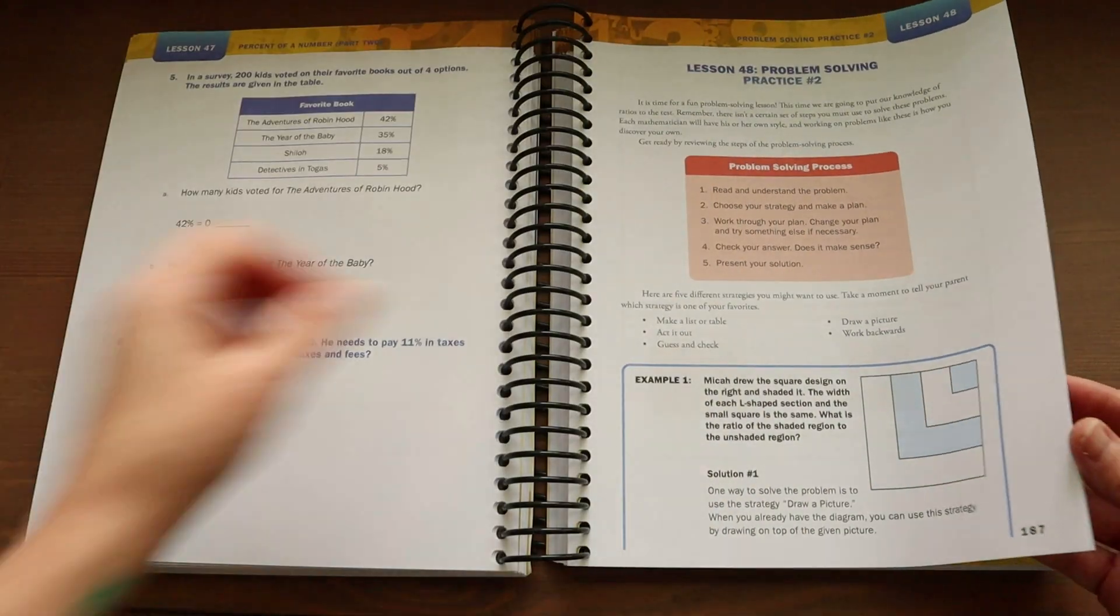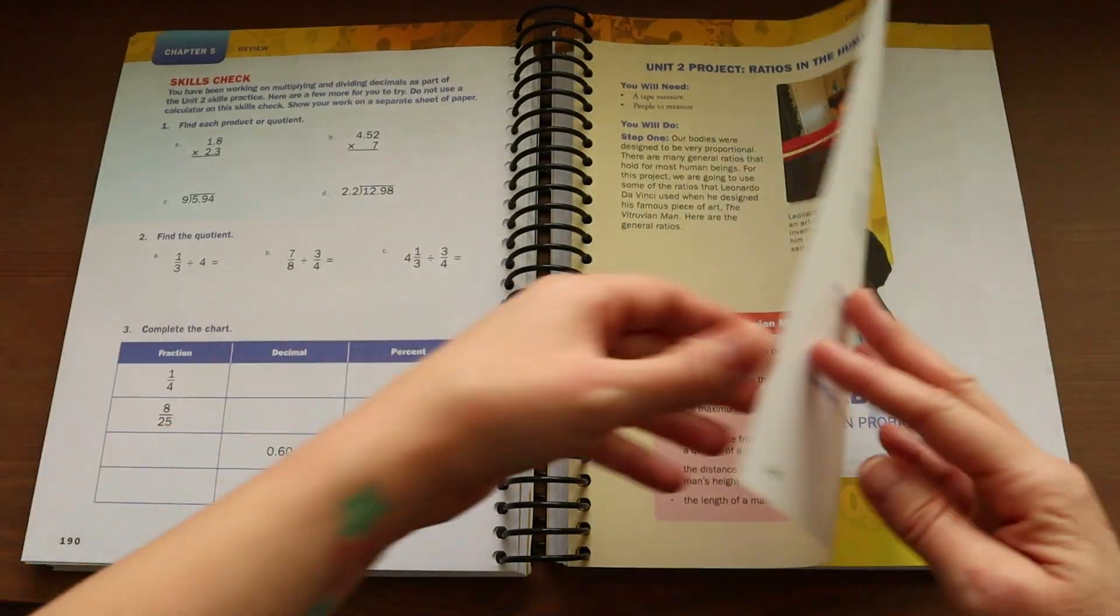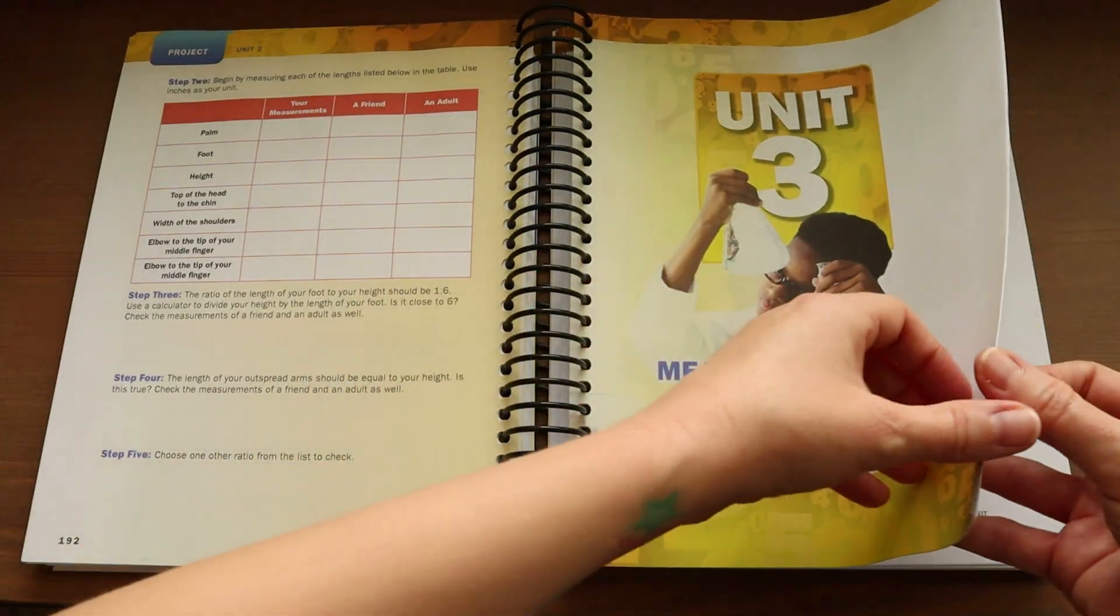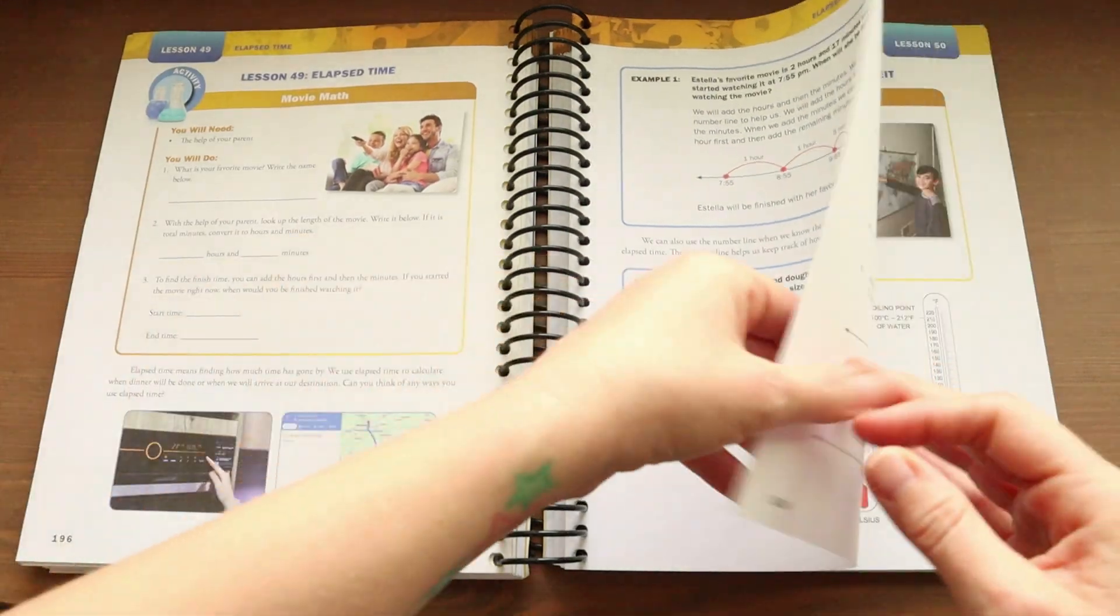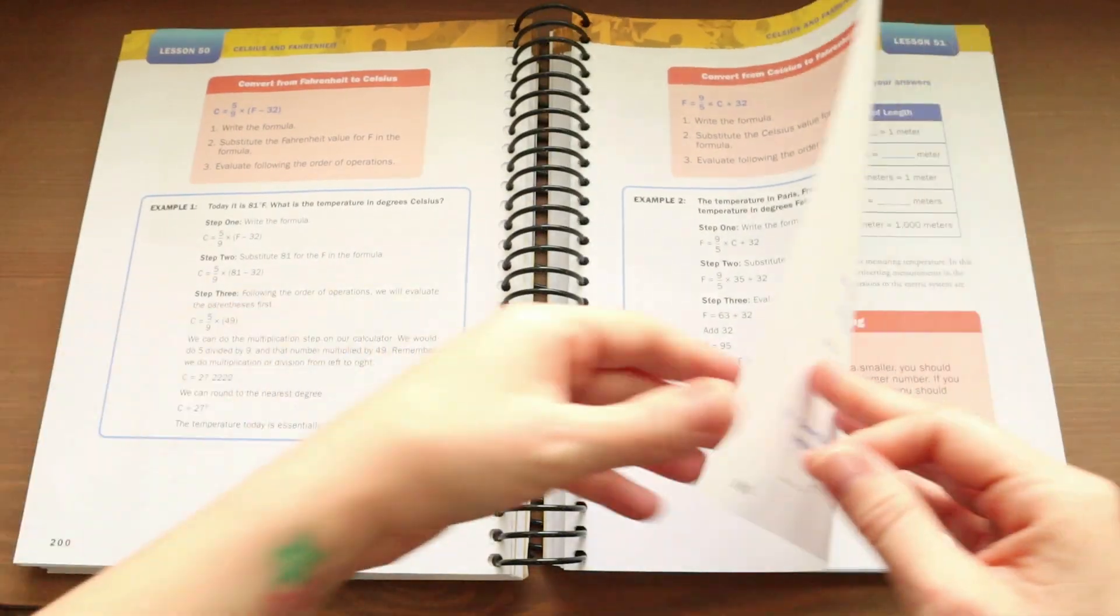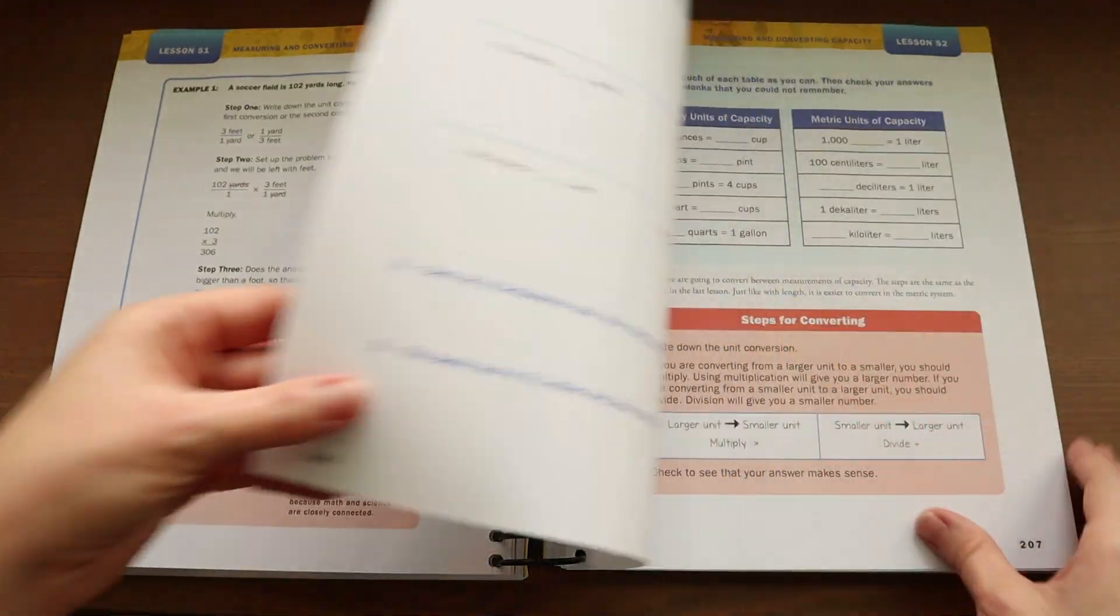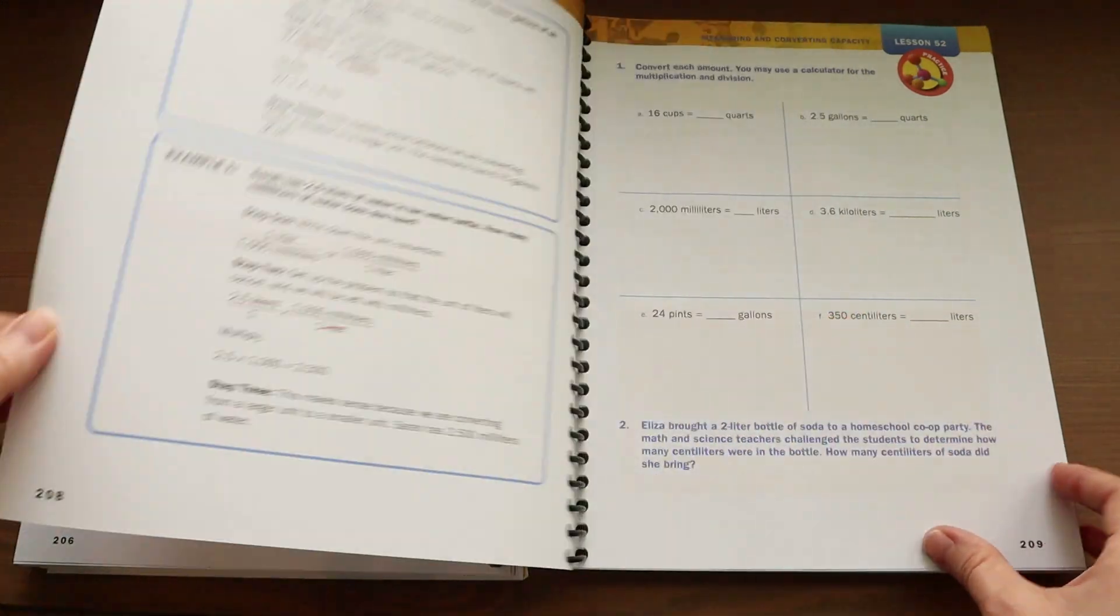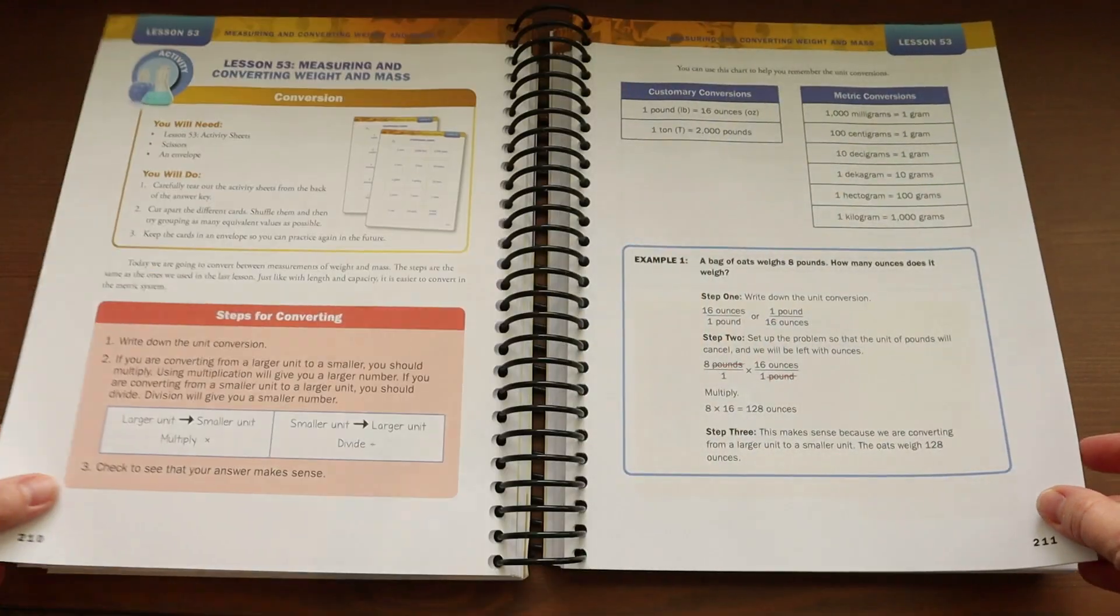Now I did not see an estimated time that it takes for each lesson, but these are short hands-on lessons and I'm guesstimating they'll take about 20 to 45 minutes just depending on the lesson and the child and how fast they pick up each concept. This can obviously be more or less. This is just my personal guesstimate looking at each one and thinking about how long they would take my son.